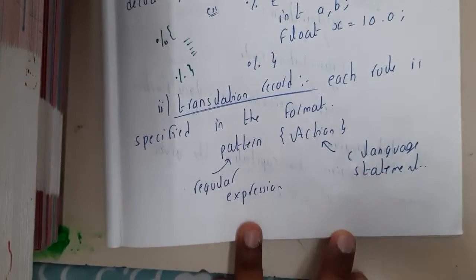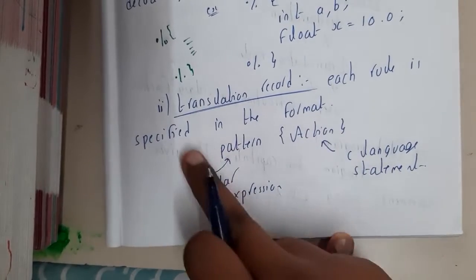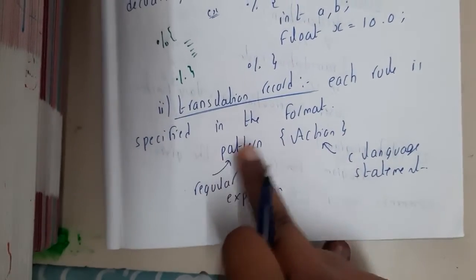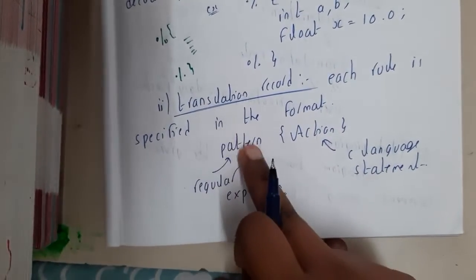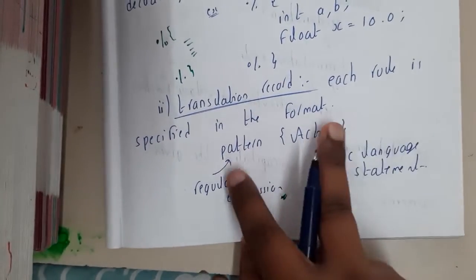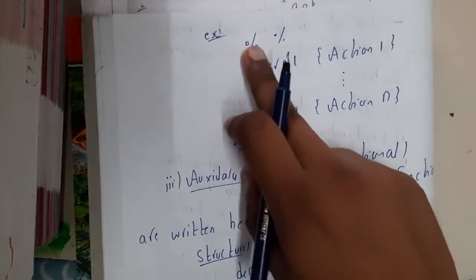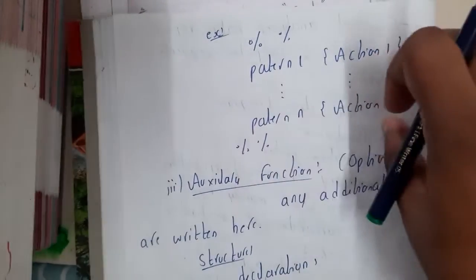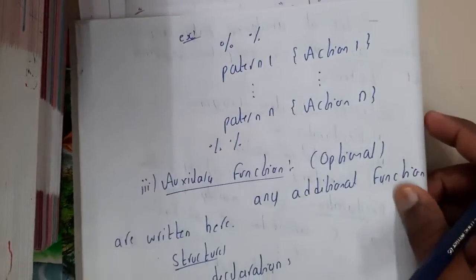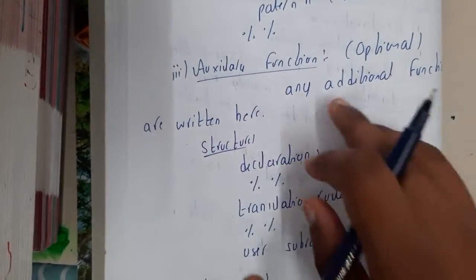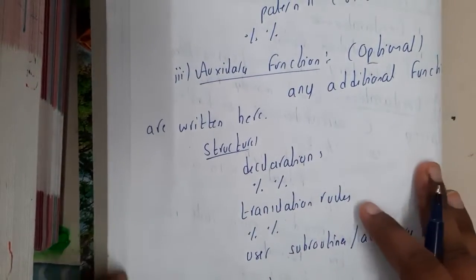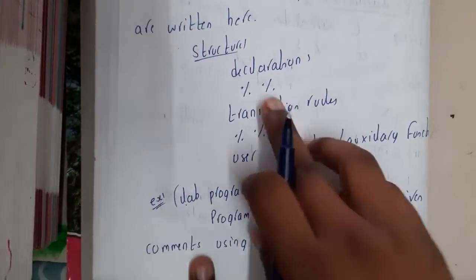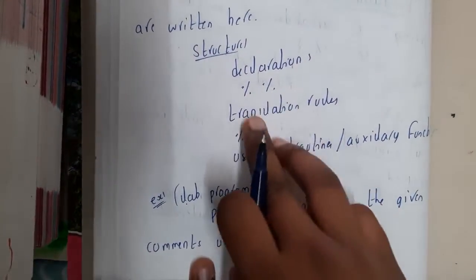Translation rules are rules based on patterns specifying what action to take. Each rule is specified in the format: pattern followed by action — where pattern is a regular expression and action is what to do when that expression is satisfied. The translation rules section starts and ends with %% — all the rules are written in between. Auxiliary functions are optional additional functions; they are not mandatory.